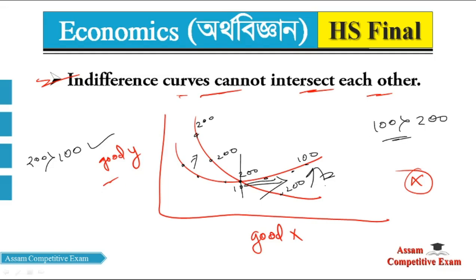100 is on the lower curve. We can see from this that the higher indifference curve represents a higher level of satisfaction. If the curves intersect, one point would need to represent both 100 and 200 satisfaction simultaneously — which is contradictory and therefore cannot happen.